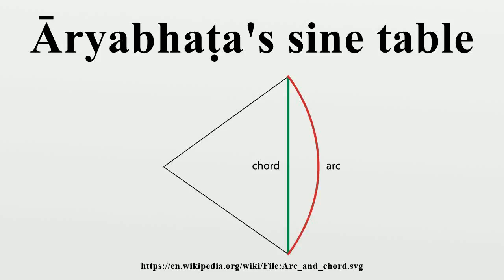Aryabhata's sine table is a set of twenty-four numbers given in the astronomical treatise Aryabhatiya, composed by the 5th-century Indian mathematician and astronomer Aryabhata, for the computation of the half-chords of certain arcs of a circle. It is not a table in the modern sense — that is, it is not a set of numbers arranged into rows and columns.